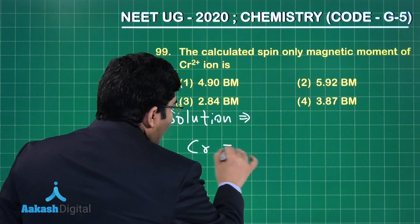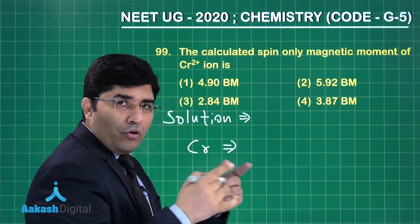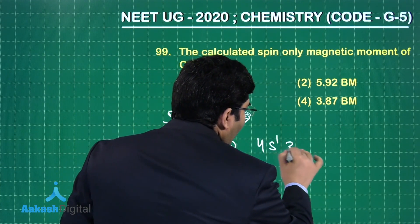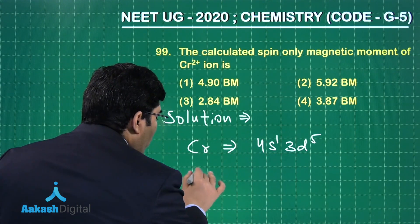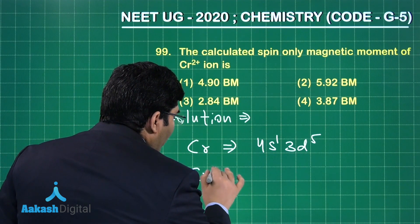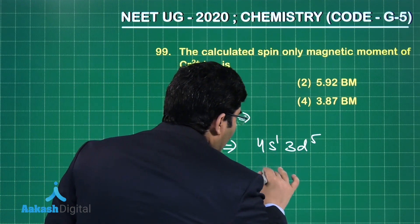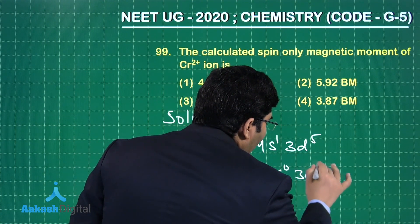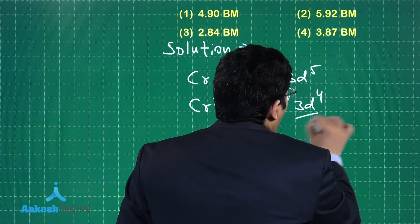Chromium has electronic configuration, means the outer electronic configuration of chromium is 4s¹3d⁵. This is the outer electronic configuration. Therefore, the electronic configuration of chromium 2+ will be equal to 4s⁰3d⁴, and these four electrons are unpaired electrons.